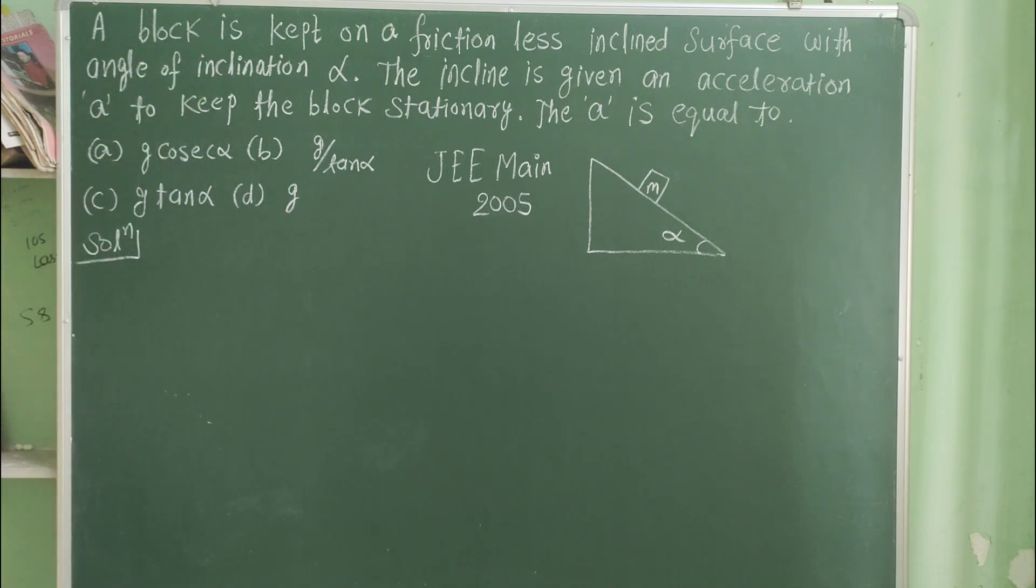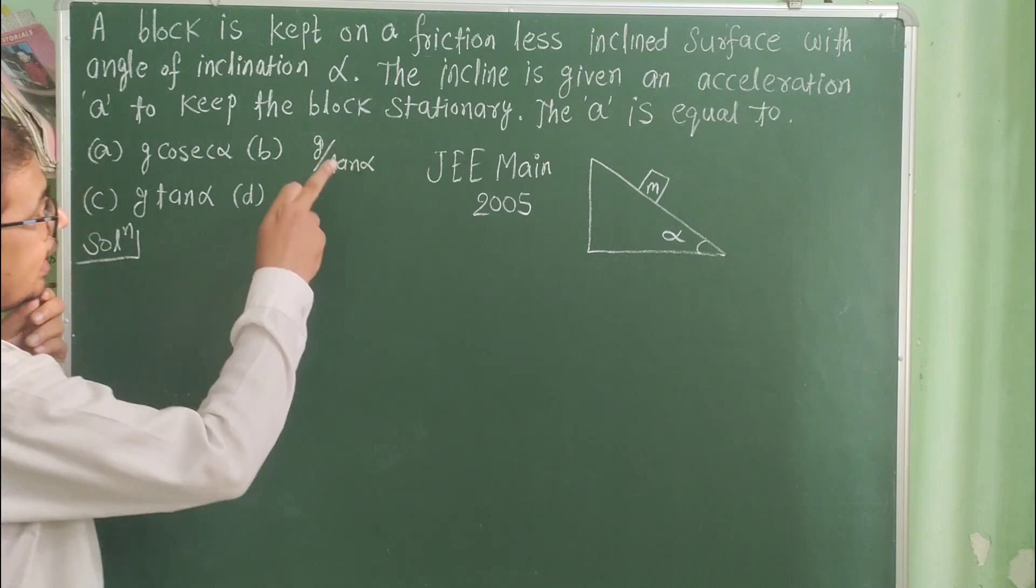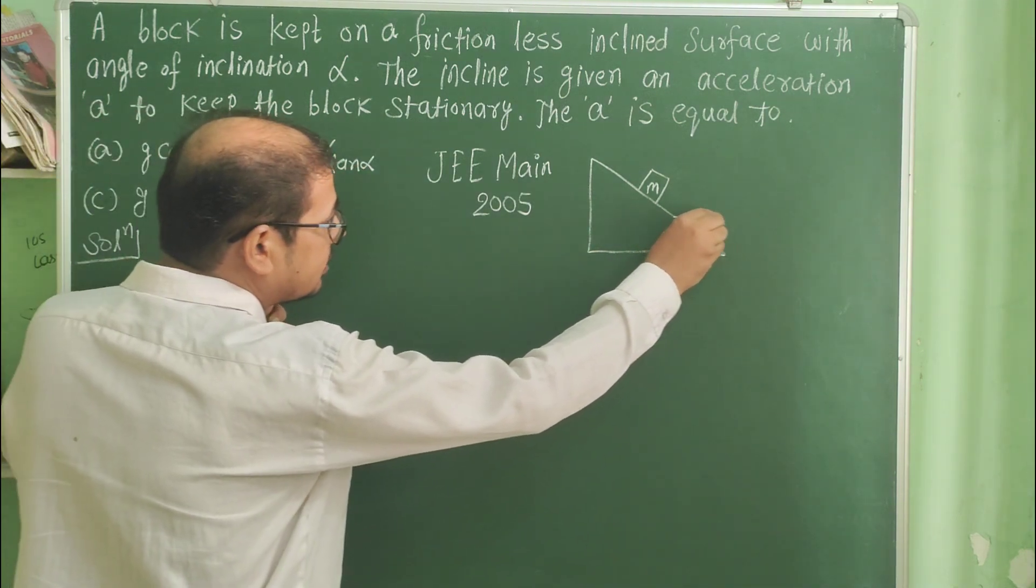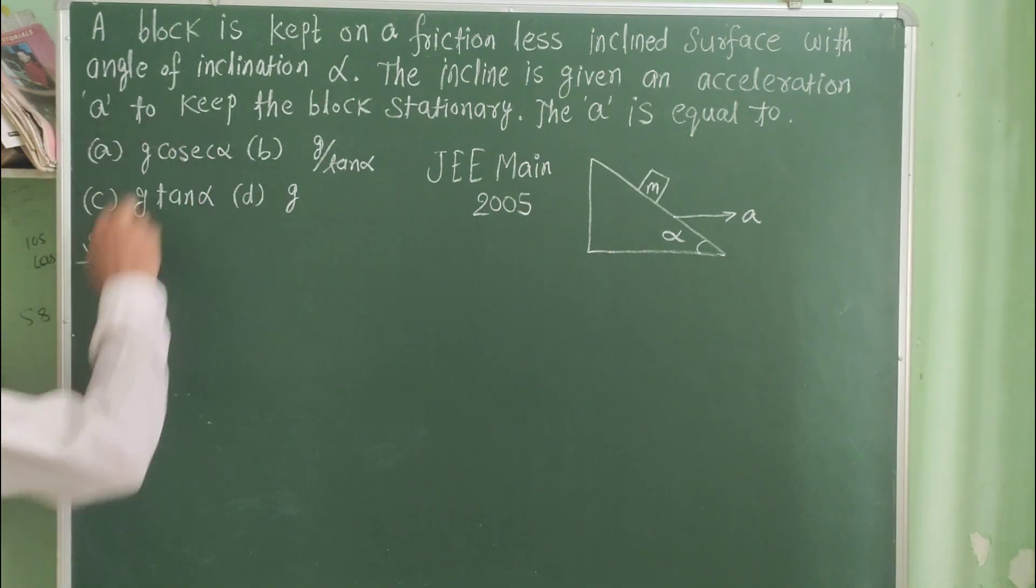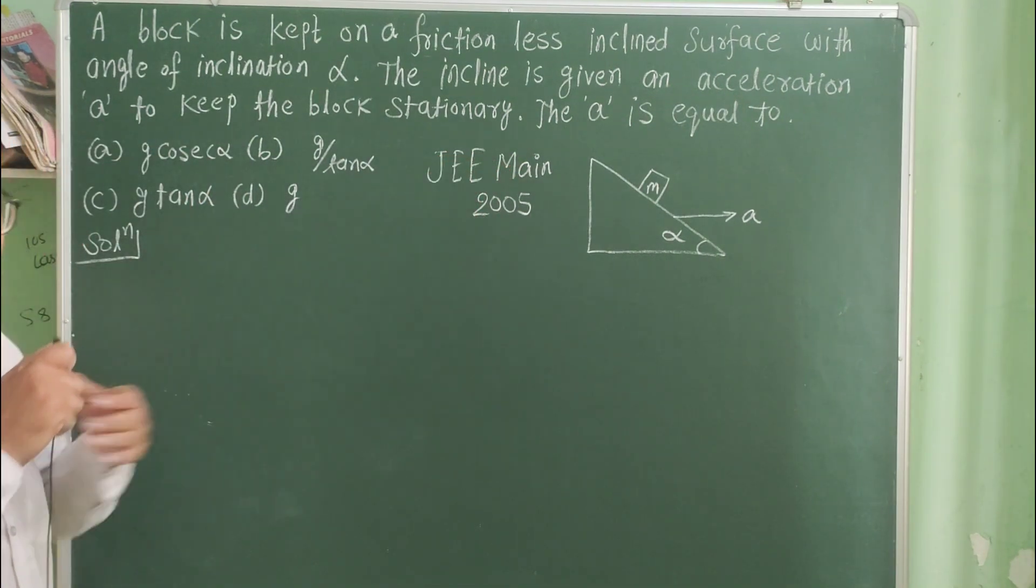A block is kept on a frictionless inclined surface with angle of inclination alpha. The incline is given an acceleration A to keep the block stationary. We need to find A.